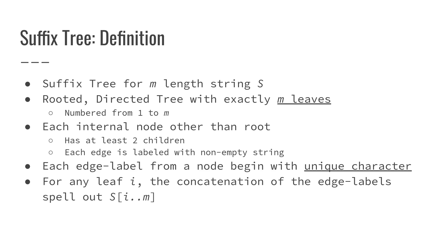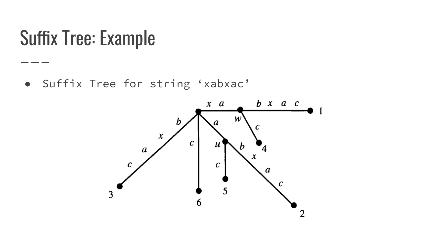Each edge is labeled with non-empty strings, and each edge label from a node begins with a unique character. For any leaf I, the concatenation of the edge labels spells out the string from index I all the way to index M. Here's an example of a suffix tree for the string XABXAC. All of the leaves are numbered 1 through 6. Starting from the root at the center of the figure, each string emanating outward spells out a suffix of XABXAC, and all the suffixes are represented as edge labels.